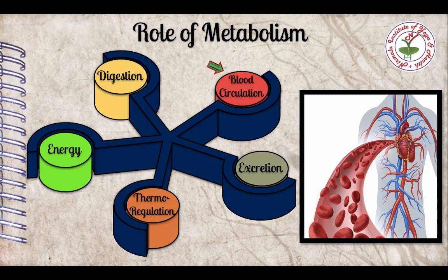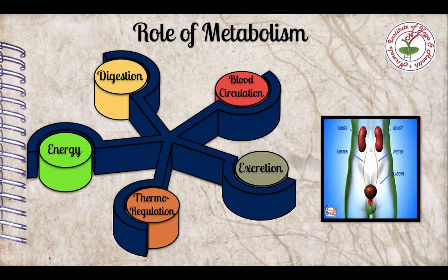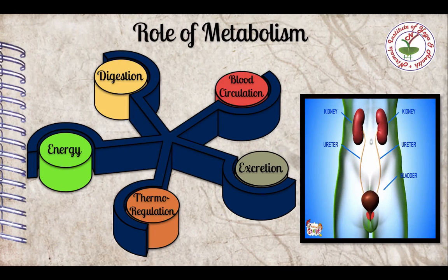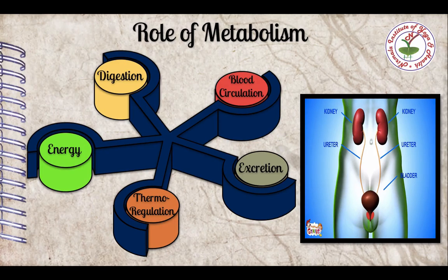Second point is blood circulation. For the flow of blood cells from one place to another, energy is required. That energy comes from metabolism. Third point is excretion. For removal of waste like passing stool, urination and sweating, energy is required. That energy is supplied by metabolic processes.